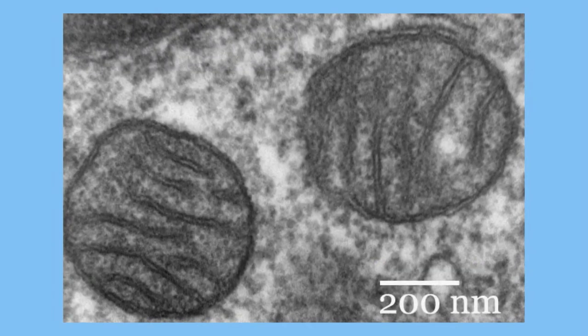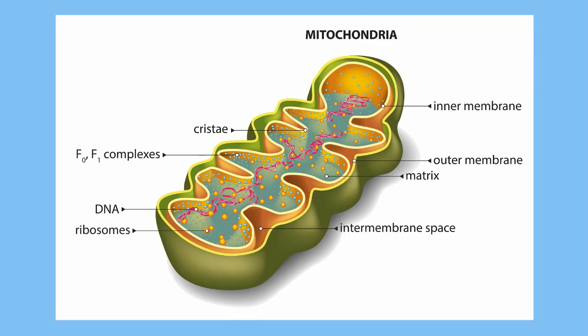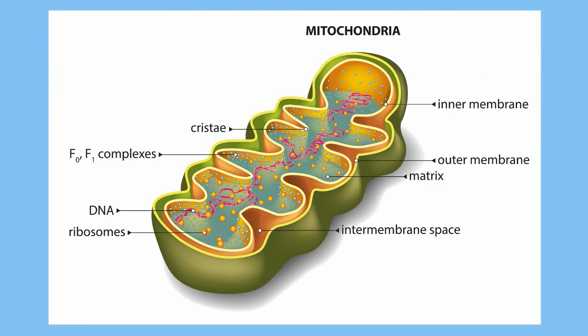A mitochondria has a unique shape. It has two layers and is folded on the inside.